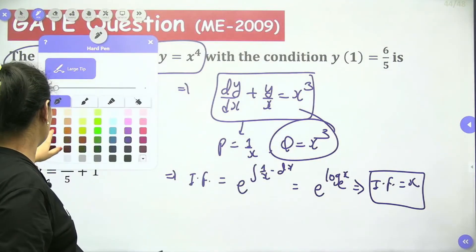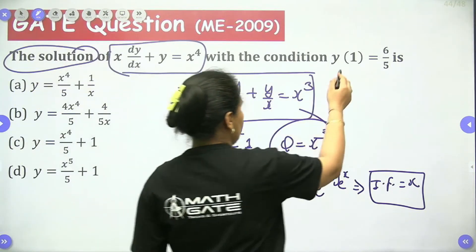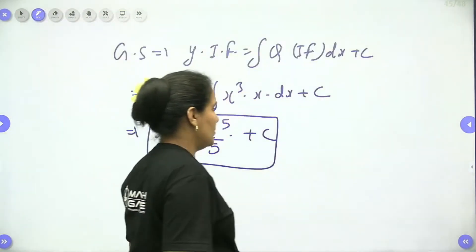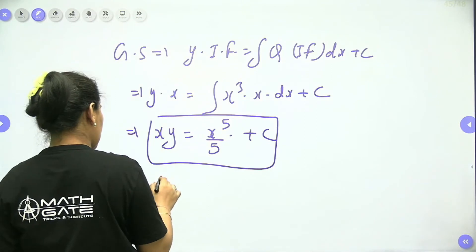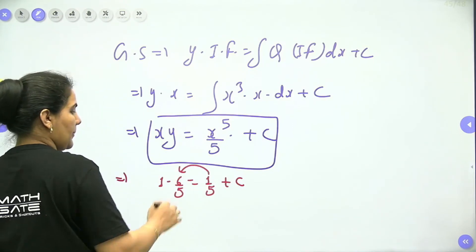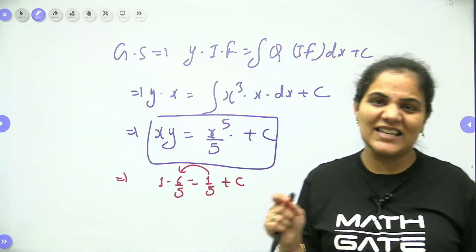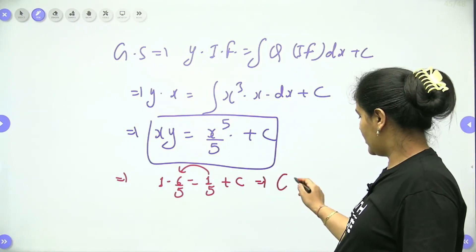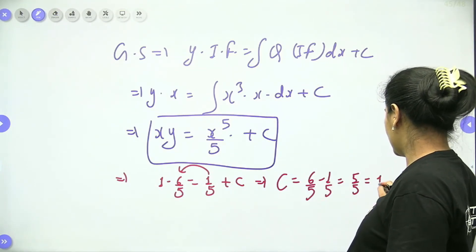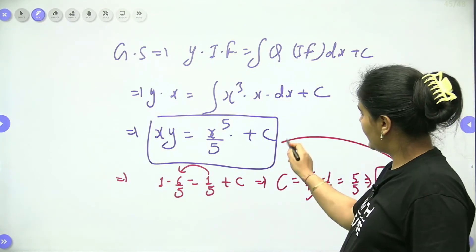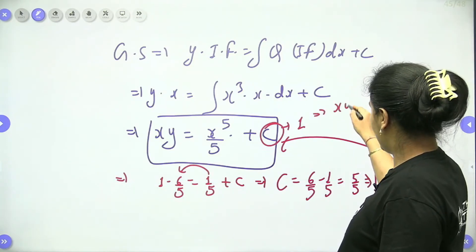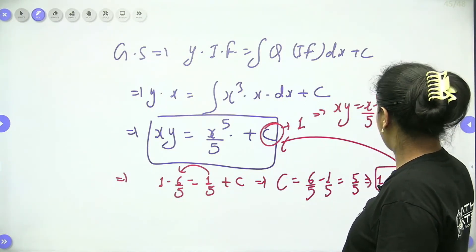We don't have the answer in this form, so we need to find the constant. At x equals 1, y equals 6/5: substituting gives 1·(6/5) equals 1/5 plus c, so 6/5 minus 1/5 equals 5/5 equals 1, hence c equals 1. So xy equals x⁵/5 plus 1.